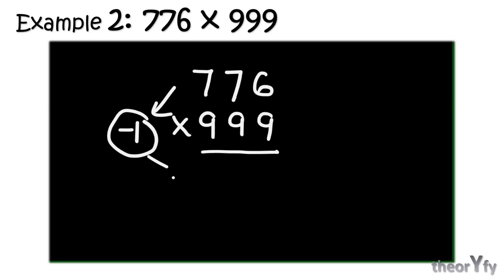Let's take one more example. Here we are going to multiply 776 with equal number of nines, 3 nines: 999. So Step 1, subtract 1 from 776. You will get 775. LHS is solved. We go for the RHS now, so subtract this 775 from 999.